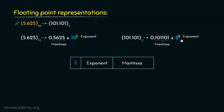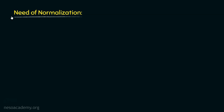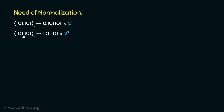But before we save this information, we actually need to understand the need of normalization. Because if you observe, the representation of mantissa and exponent can be done in different ways. For instance, in this case we have shifted the radix point towards the left, and that is why the power of 2 is 3.